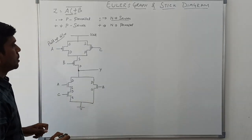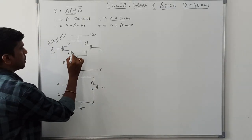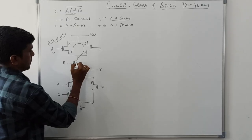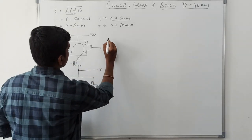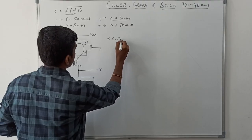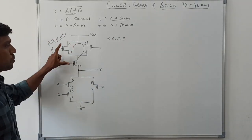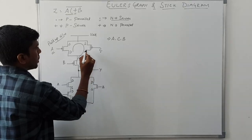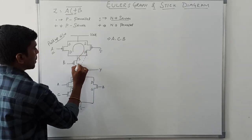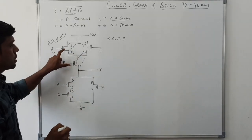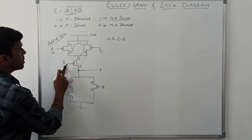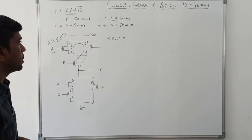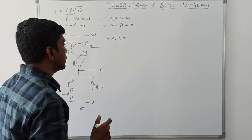A is the starting point. The Euler path of the pull-up network is A, C, and B. We have different solutions — for example, if C is the starting point, the path is C, B, A. If B is the starting point, the path is B, A, C. We have multiple solutions; any one of the solutions you can take to solve the problem.